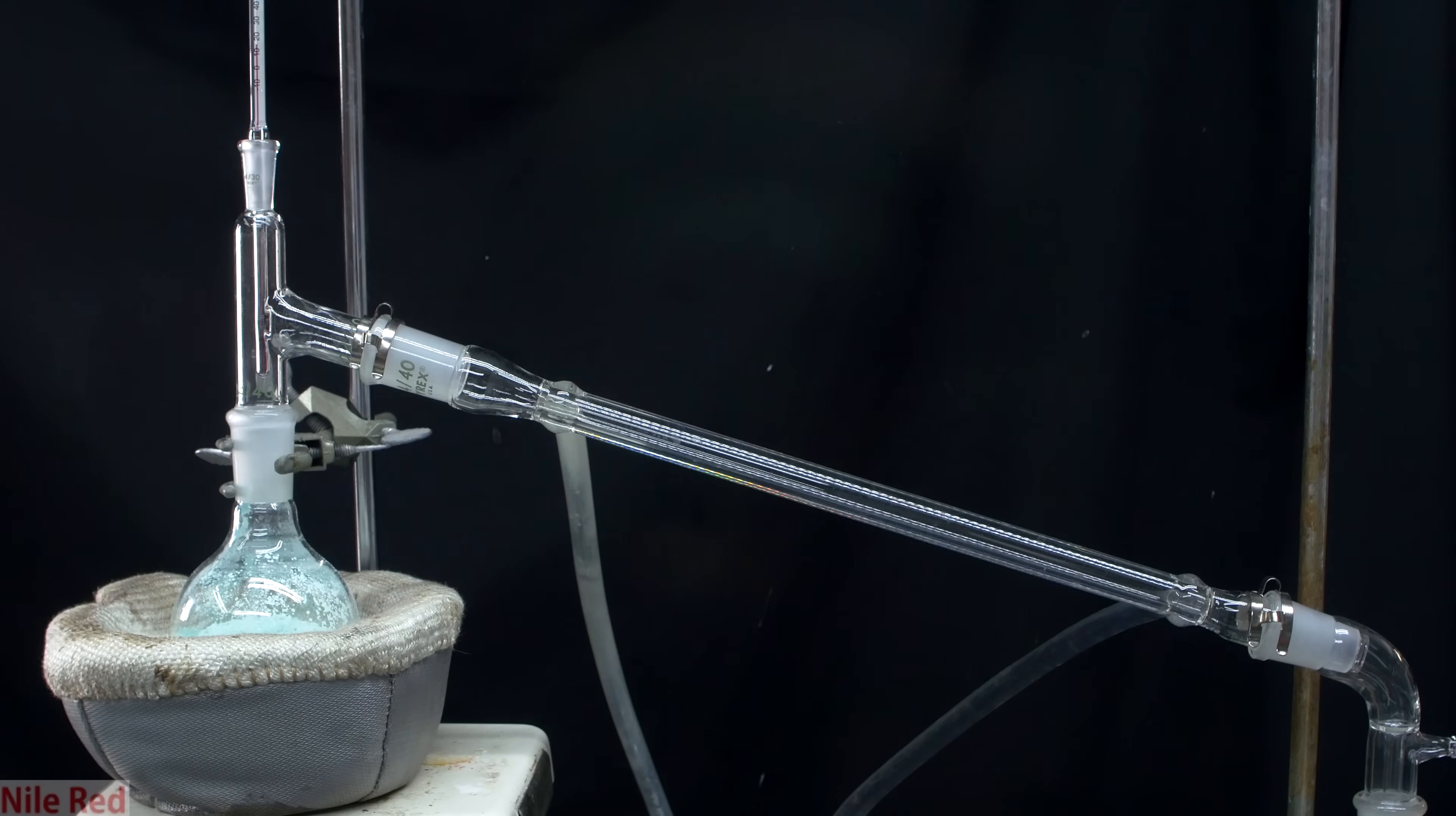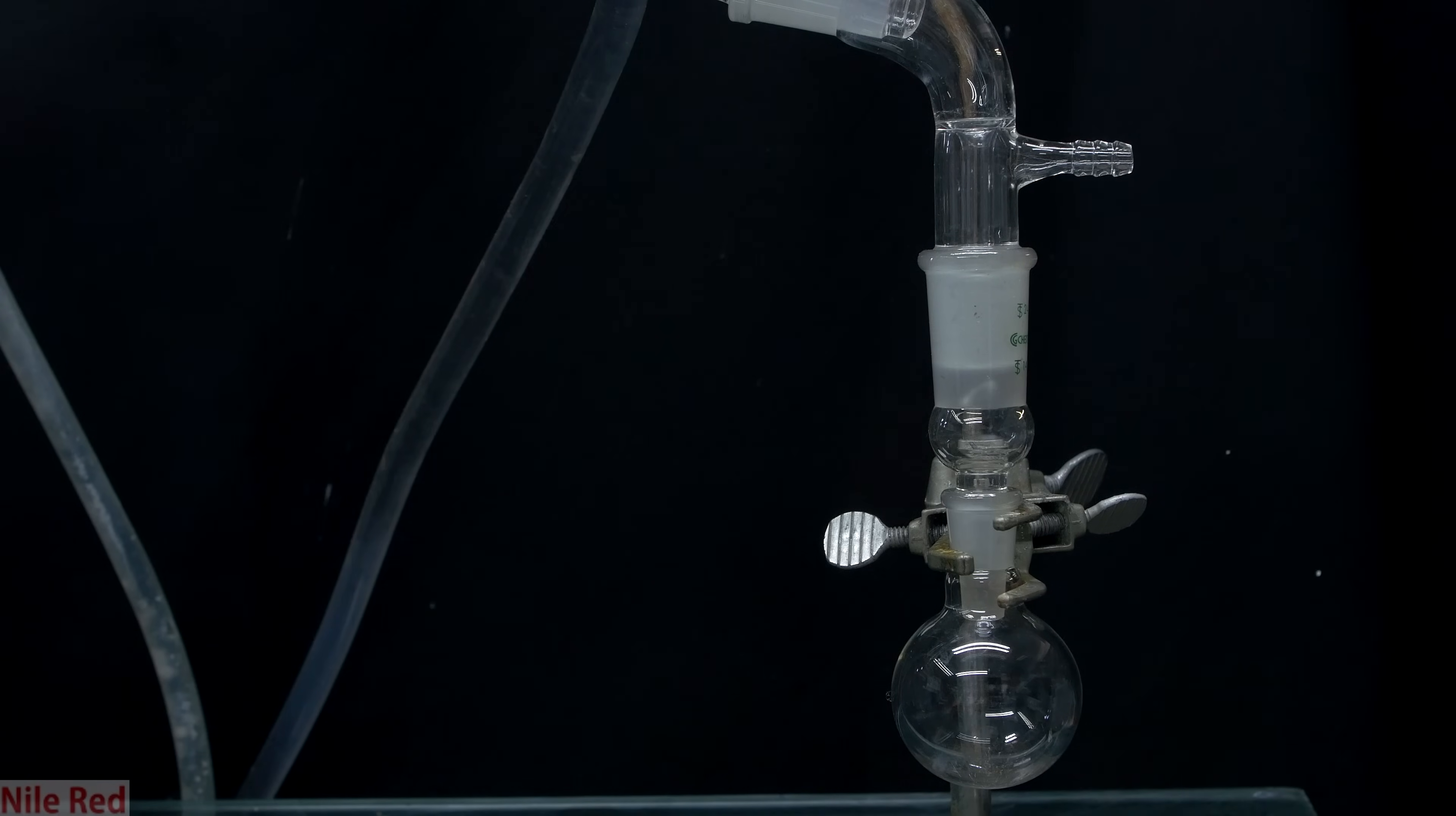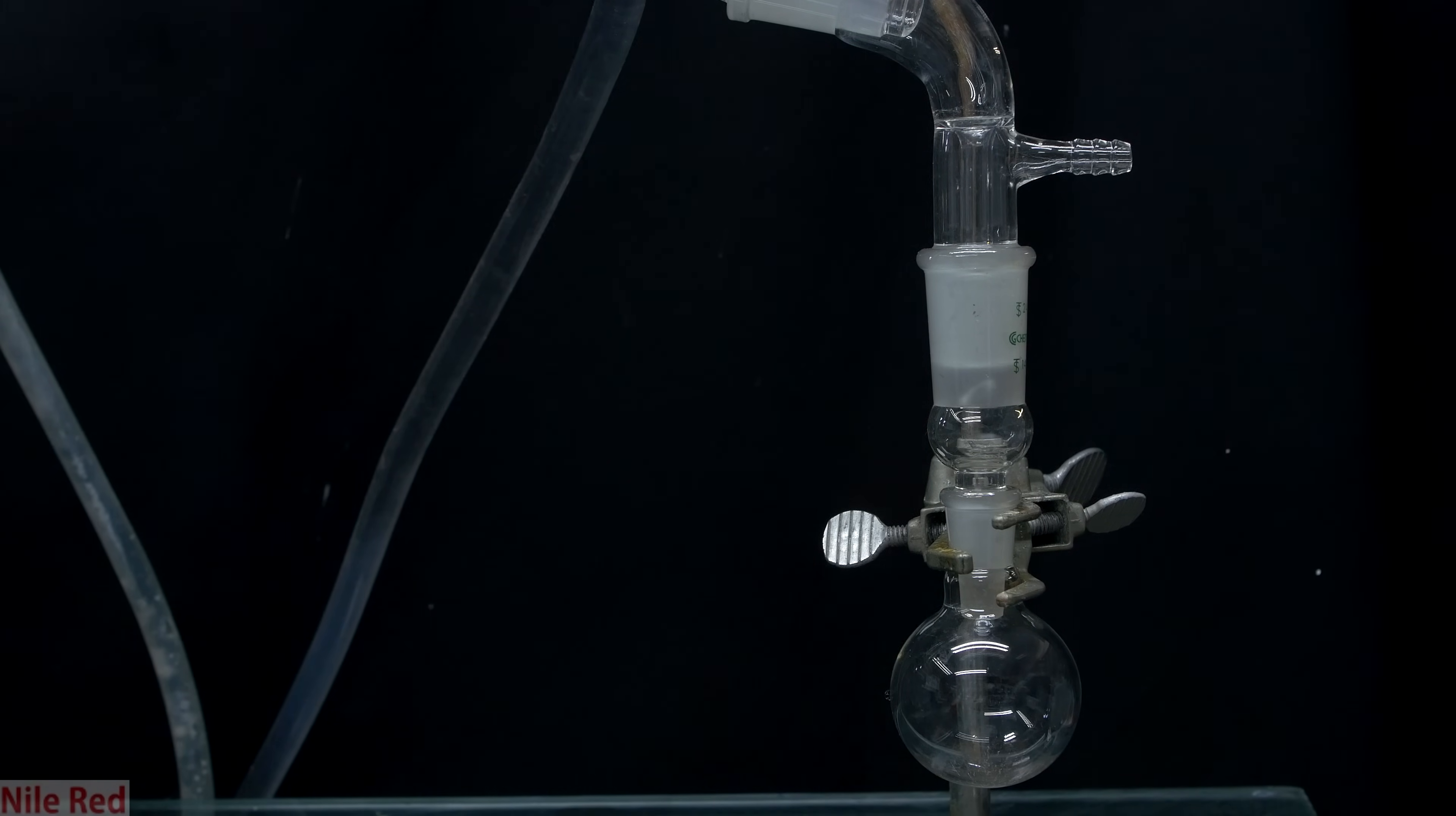The next step to do is to set up a distillation that looks like this. Below the round bottom flask is our heating mantle which is going to be supplying the heat, and we have our cold water condenser to condense any pyridine vapors that come off. In the previous shot you couldn't see it, but at the far right we have our receiving flask which is going to be collecting the pyridine.